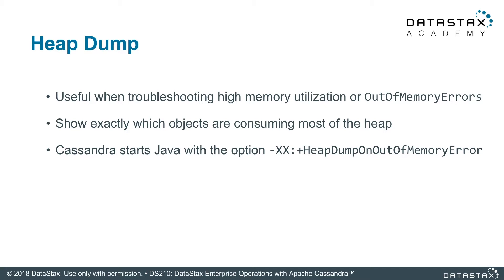To be able to review a heap dump after a Java process dies, you need to start the process with `+HeapDumpOnOutOfMemoryError` enabled — it's on the slide. If you're seeing errors like this in your log file, you may be approaching an out of memory event, in which case a heap dump will help you understand why.